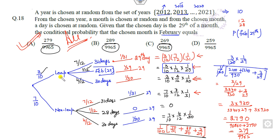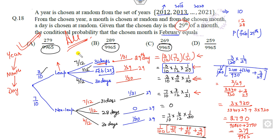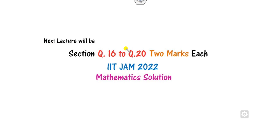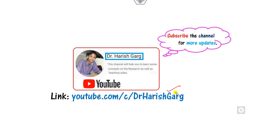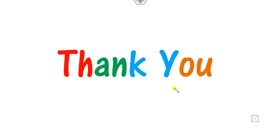That's the approach: start from the year, then go to the month, then go to the day. Since we need the 29th day, it depends on whether it's a leap year or a non-leap year, then discretize month-wise. The right answer is 279/9965. We will see more questions in our next lectures related to IIT JAM 2022. Follow the link for various videos. Best of luck students, thank you.